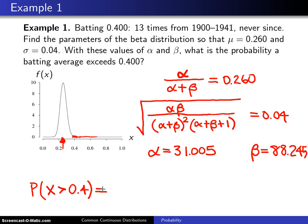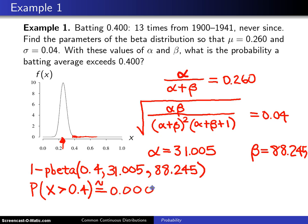That is calculated in R with the statement 1 minus pbeta. Remember, pbeta will give you the CDF, but we don't want the area to the left, we want the area to the right of 0.4, and then you put in your two parameters alpha and beta. They go into R in the same order that we have them here, 31.005 and 88.245, and when you send that to R you get approximately 0.0006077.